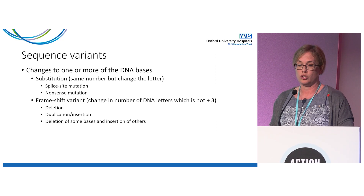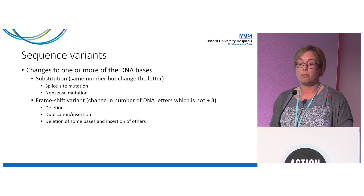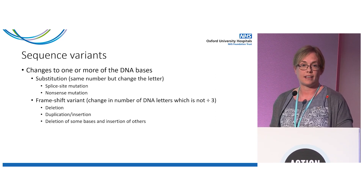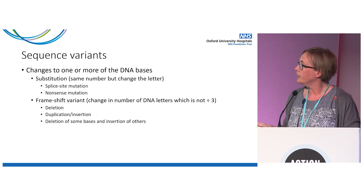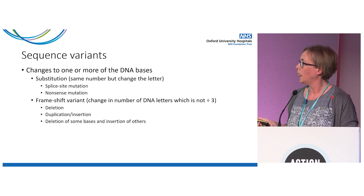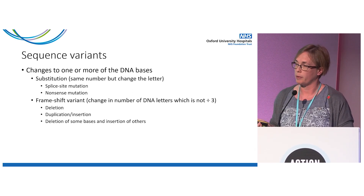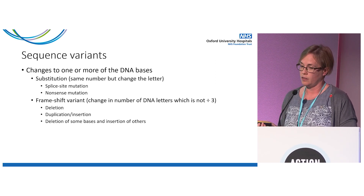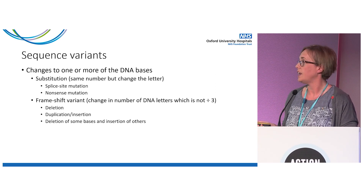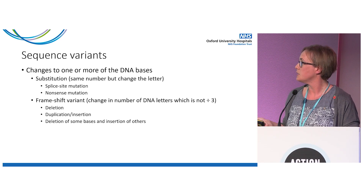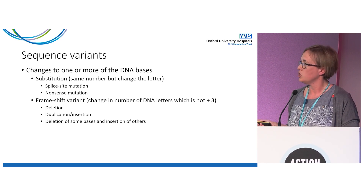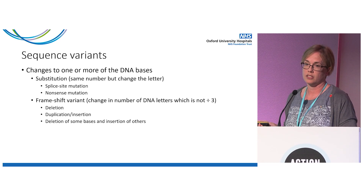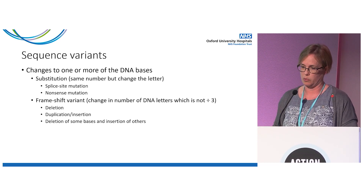Sequence variants are changes to one or more of the DNA letters — either a substitution, where you have the same number of letters but one or more has changed, or a frameshift variant where the number of letters changes by a number not divisible by three. In Duchenne, substitutions are often either a splice site mutation or a nonsense mutation. Frameshift variants may be a deletion, duplication, insertion, or a combination, again by a number not divisible by three.